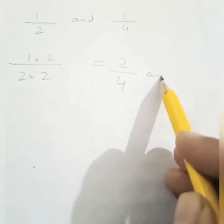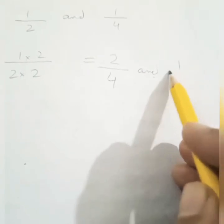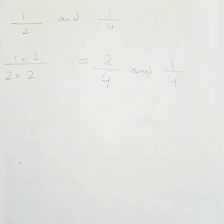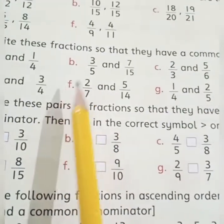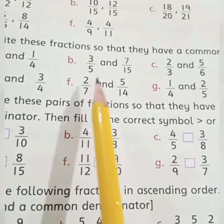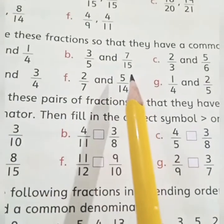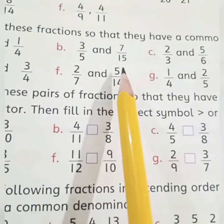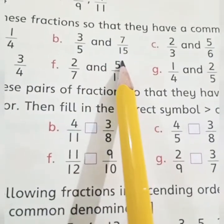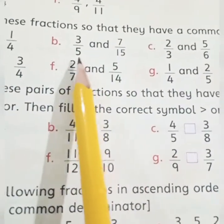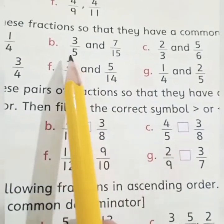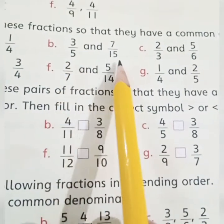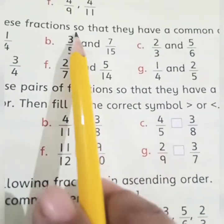Part b: three upon five and seven upon fifteen. Which is the largest denominator? Fifteen. Can we make five into fifteen? Yes, by multiplying by three, because five threes are fifteen. So we will multiply this fraction by three.